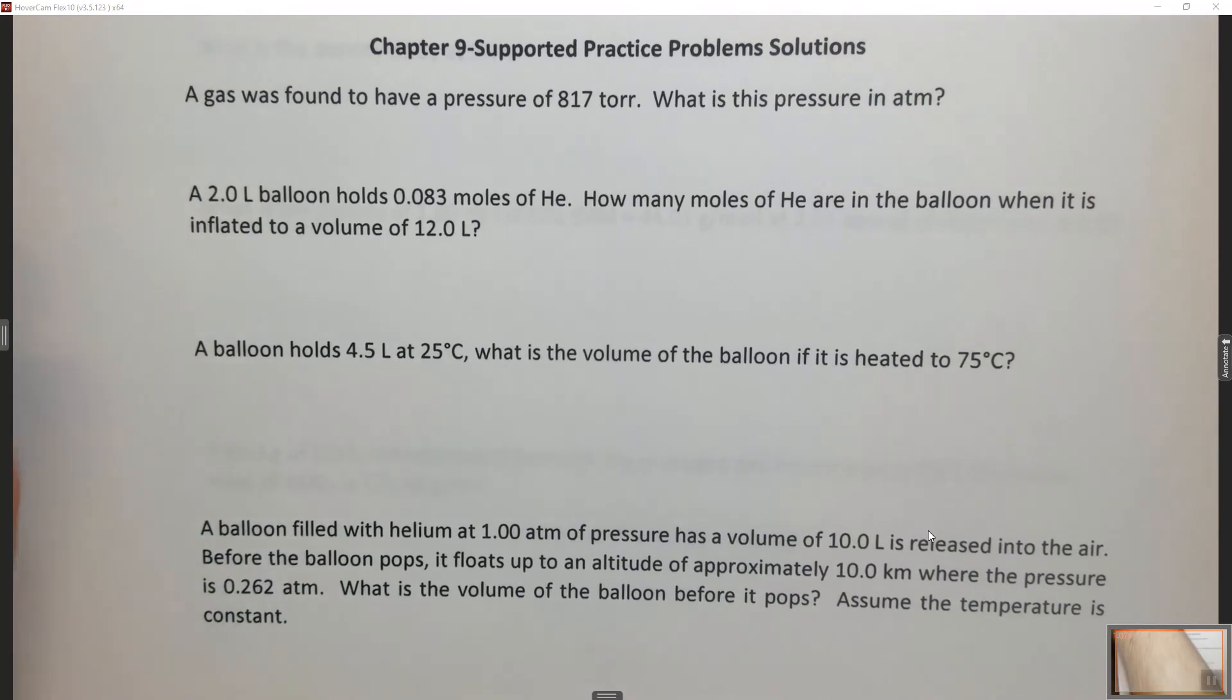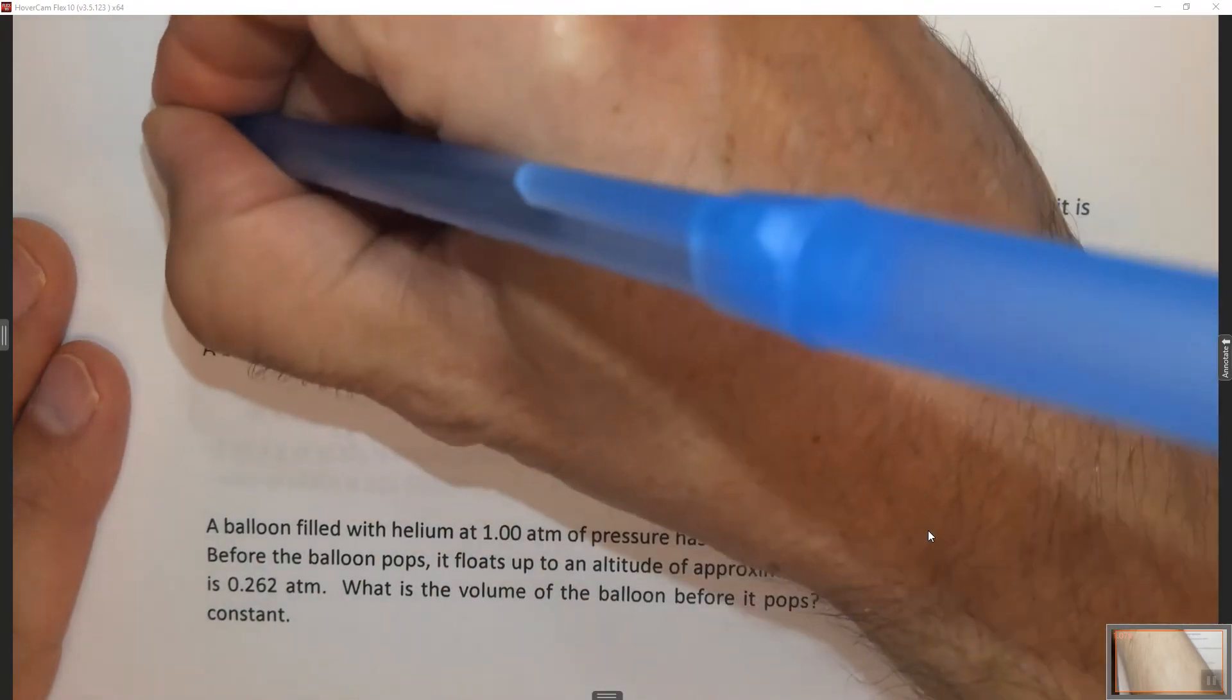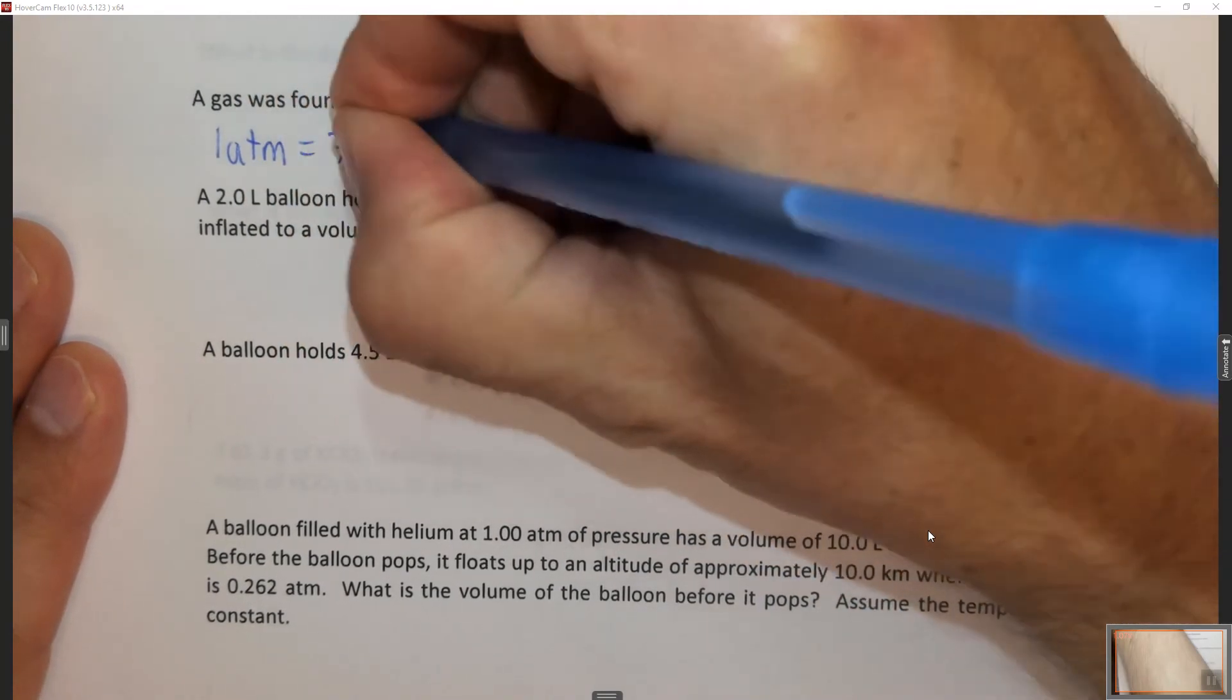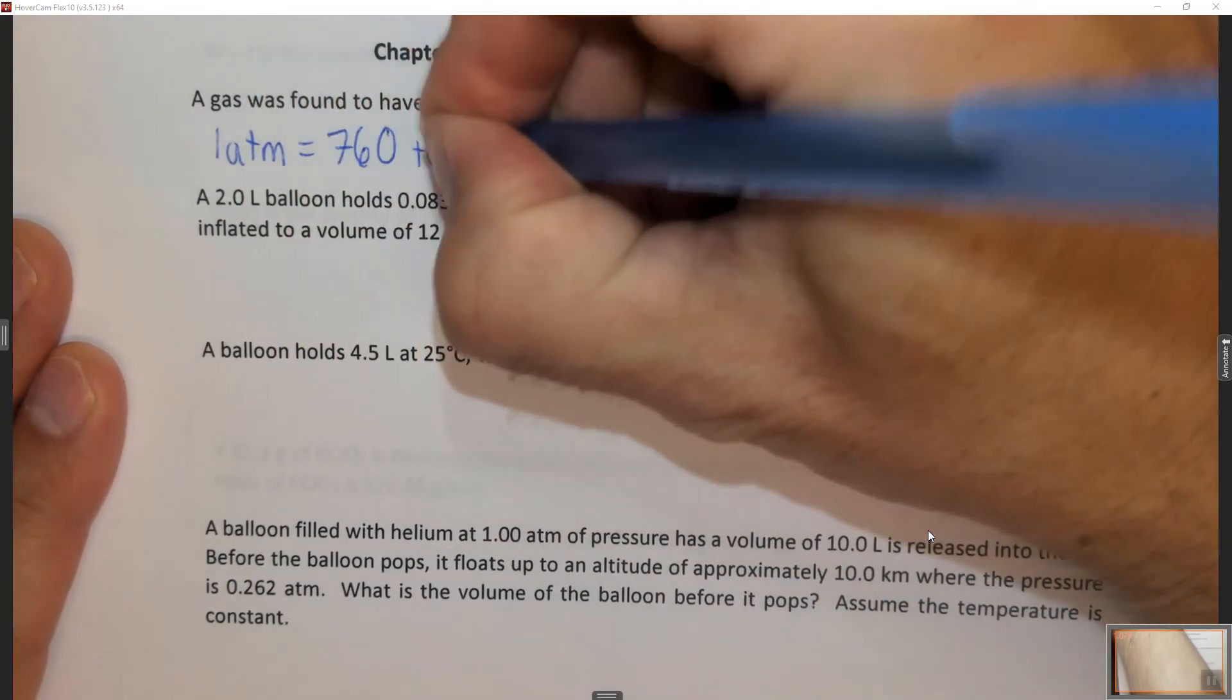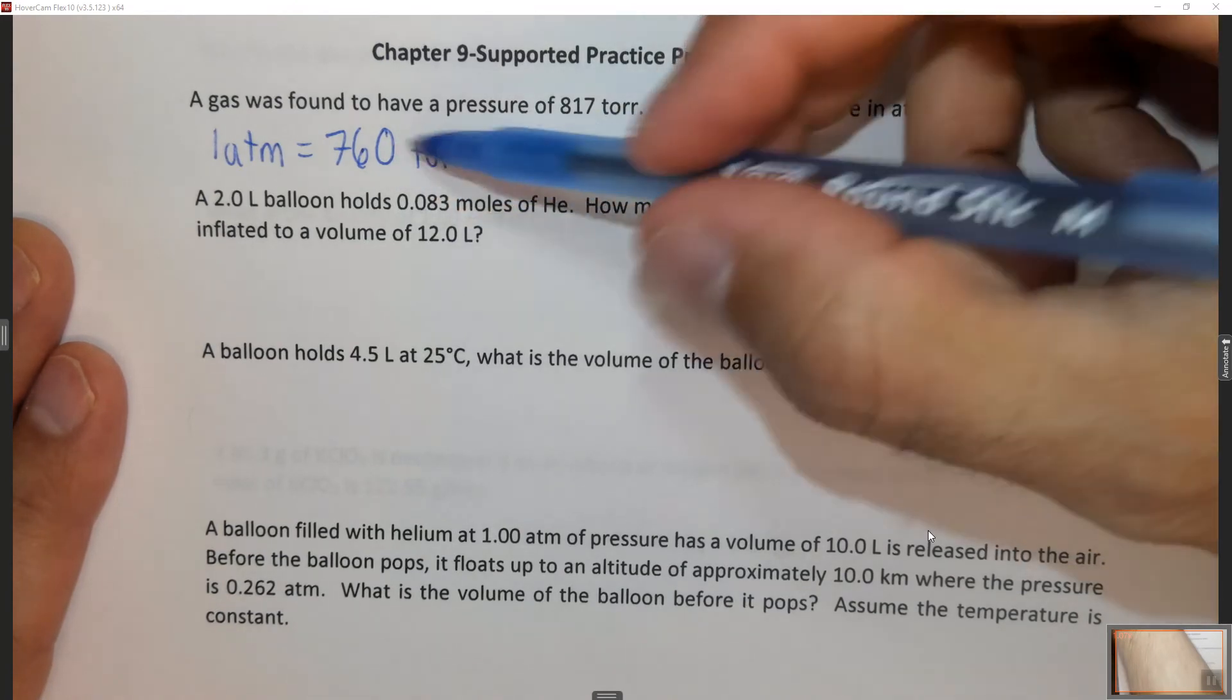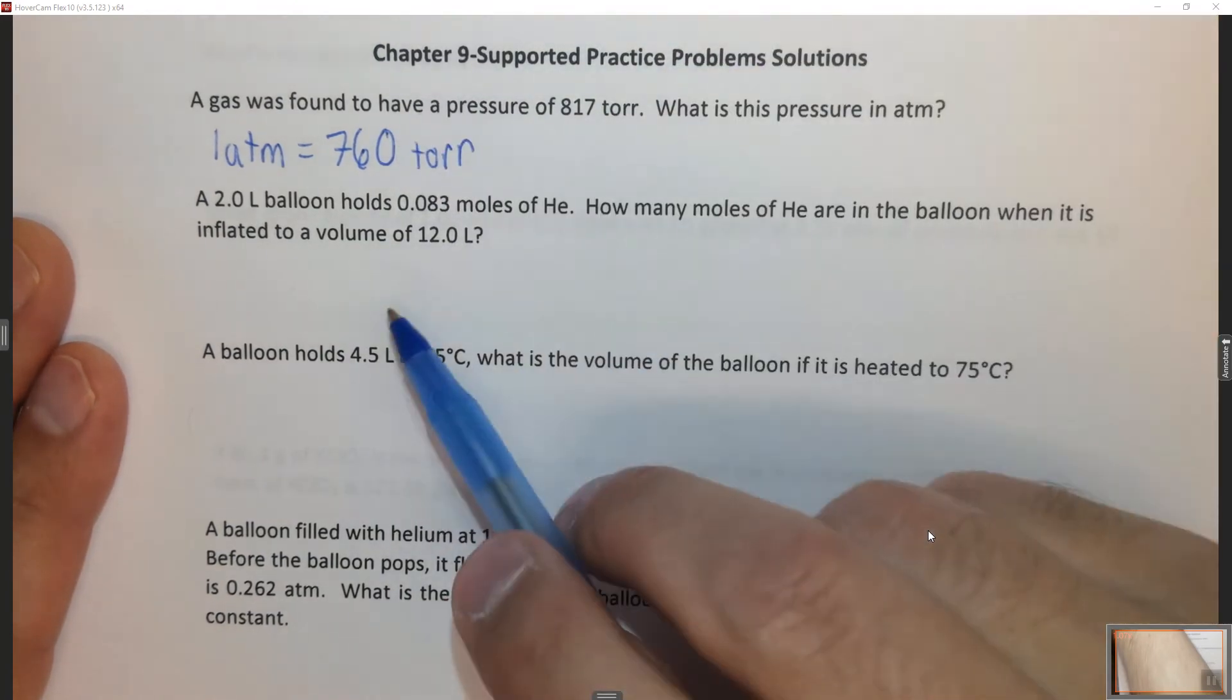So we need to convert from torr to atmospheres. We need to know that one atmosphere is equal to 760 torr, or 760 millimeters of mercury on a barometer. Torricelli, the person who invented the barometer.